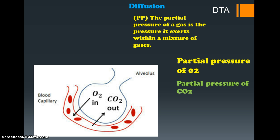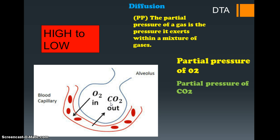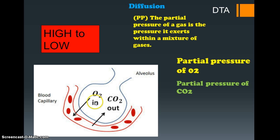Gases always move from an area of high concentration to low concentration. So the high concentration of O2 within the alveoli will move across to the capillaries, and the high concentration of CO2 - which is a byproduct of our muscles working - will move across to the area of low concentration or partial pressure in the alveoli.